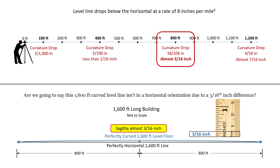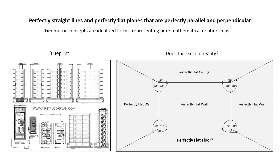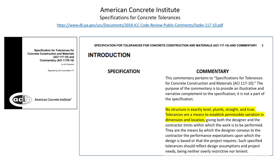And that is negligible for that distance. This would also be true for a 2,400-foot long building, which is almost a half mile, even though the sagitta is almost 7/16 of an inch. Now blueprints are drawn with perfectly straight lines and perfectly flat planes that are perfectly parallel and perpendicular to each other, but these are really idealized geometric concepts that do not exist in reality. This is from a pamphlet for the specification of concrete tolerances from the American Concrete Institute. No structure is exactly level, plumb, straight, and true. Tolerances are a means to establish permissible variation in dimension and location.